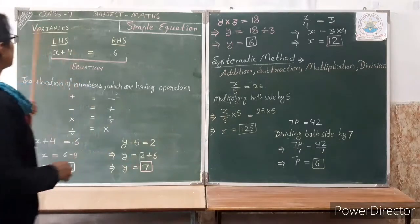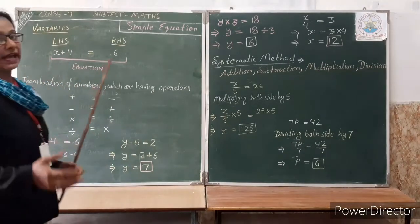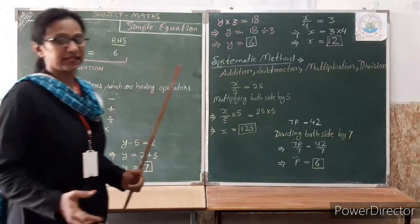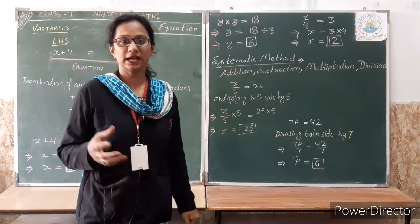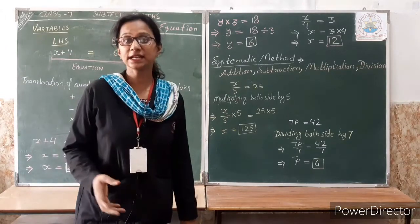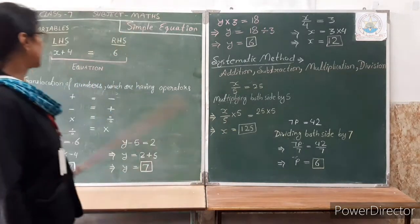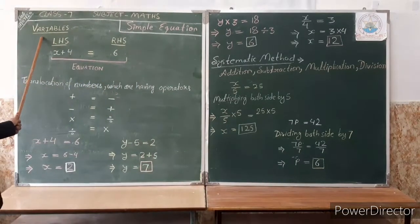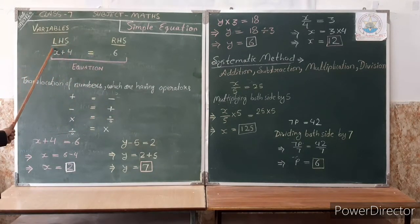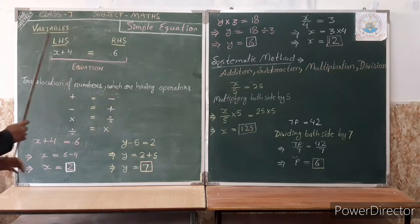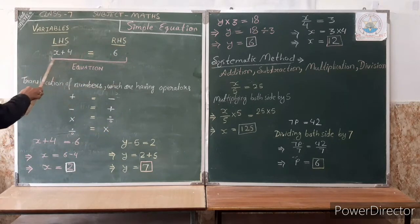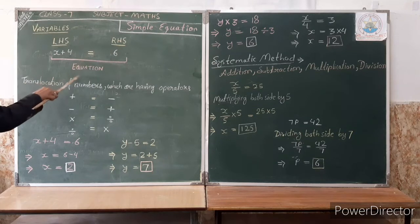If we look at variable examples: X, Y, Z — they are mostly alphabetic characters. Variables are alphabetic characters. I hope you understand what a variable is, what is the LHS, RHS, and equal sign. The combination of variables, operators, numbers, and an equal sign is known as an equation.